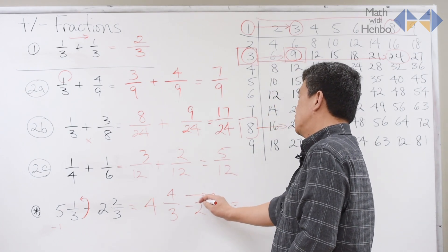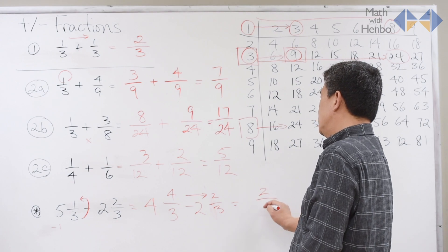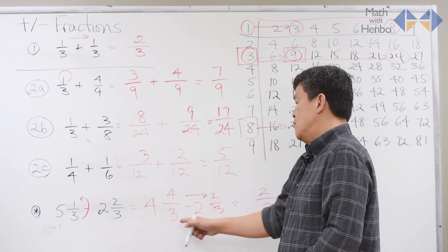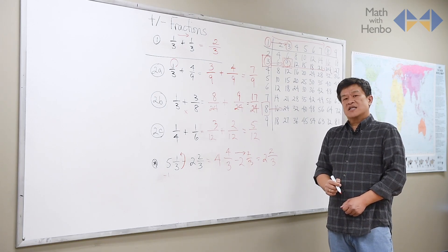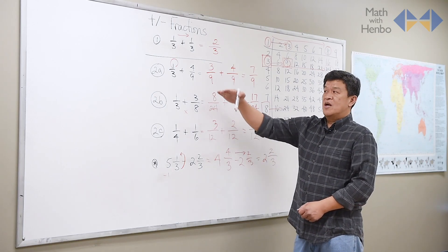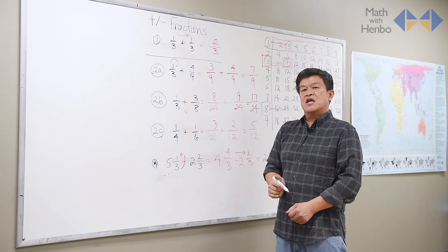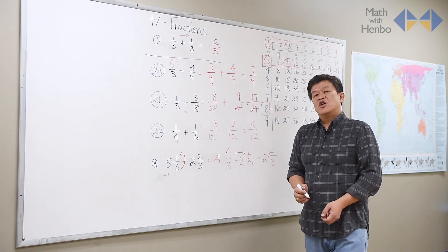So now, simply subtract 4 and 2 gives us 2. Bottom number doesn't change. 4 minus 2 gives us 2. And that, essentially, is how fractions get done. Just remember, try to follow this sequence, A, B, and C, and you will never go wrong.